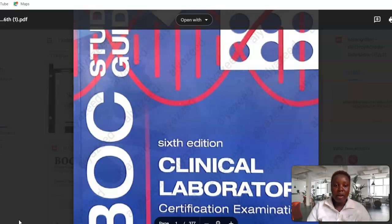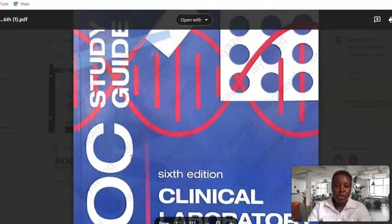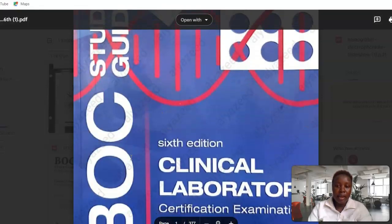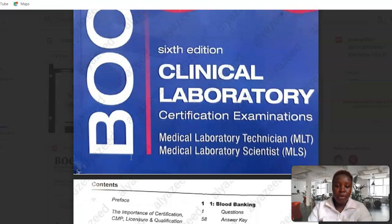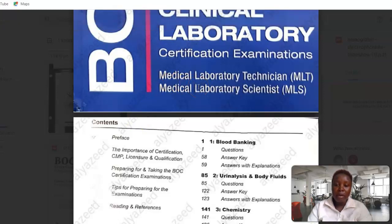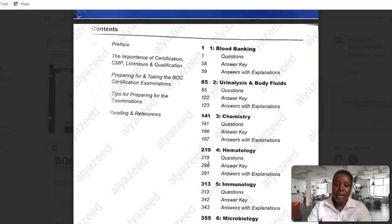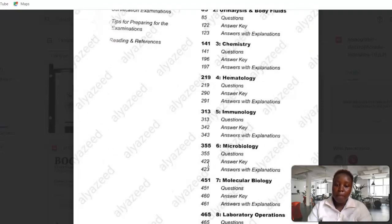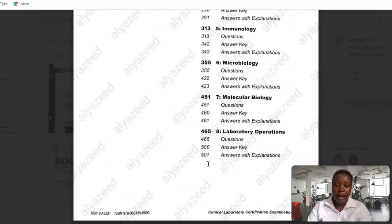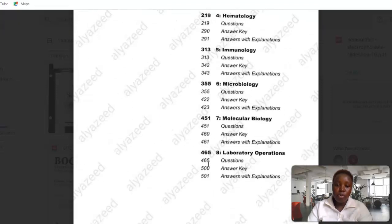One of these books is Clinical Laboratory Certification Examination, called the BOC Study Guide. This book is very good. It is made for medical laboratory technician and medical laboratory scientists. It has examination questions from blood banking, urinalysis and body fluid, chemistry, hematology, immunology, microbiology, molecular biology and lab operations. There are more than 500 questions and answers.